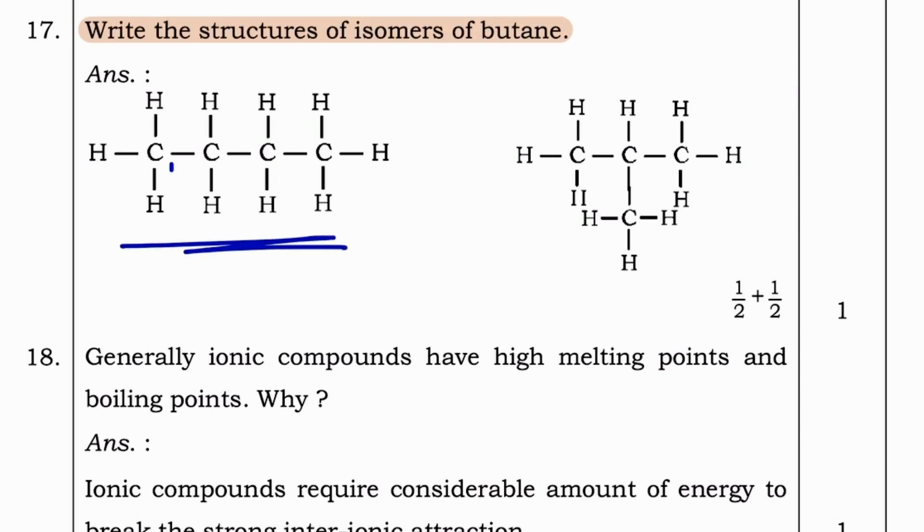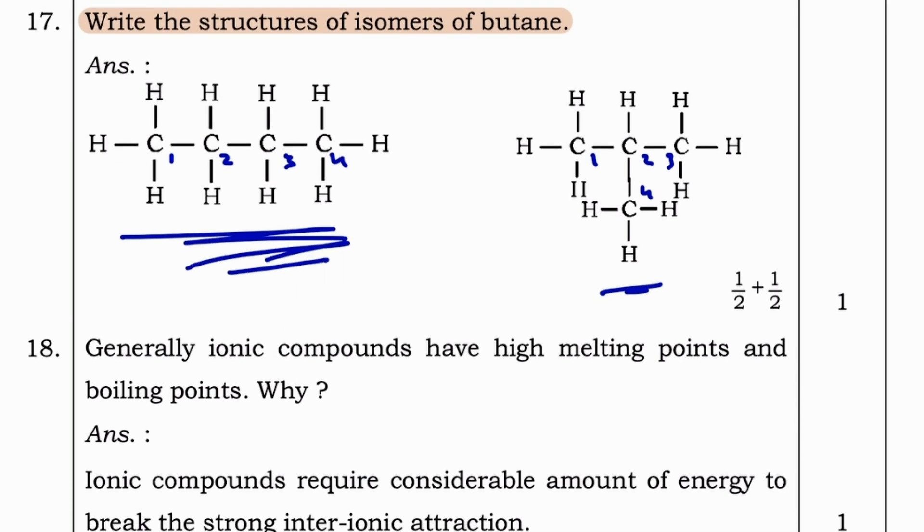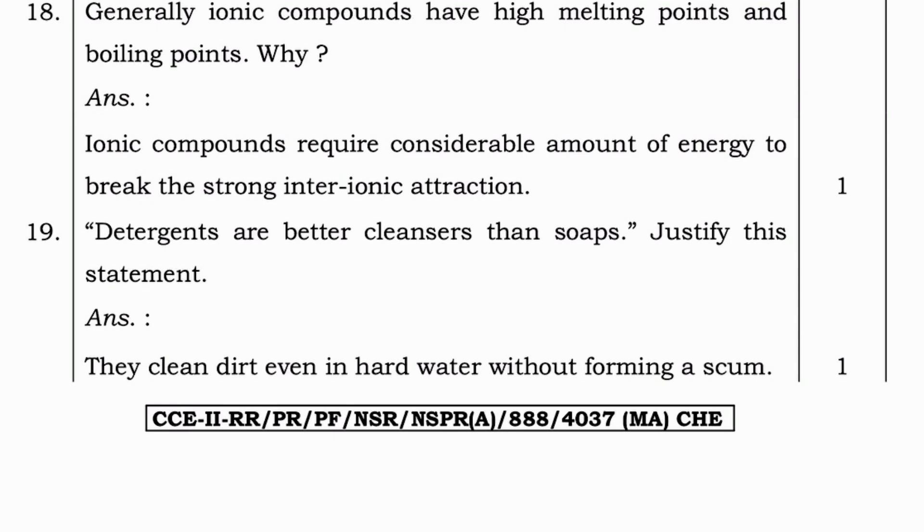Next question. Write the structure of isomers of butane. This is the structure. Butane means C4. This is long chain structure and this is isomer for it.